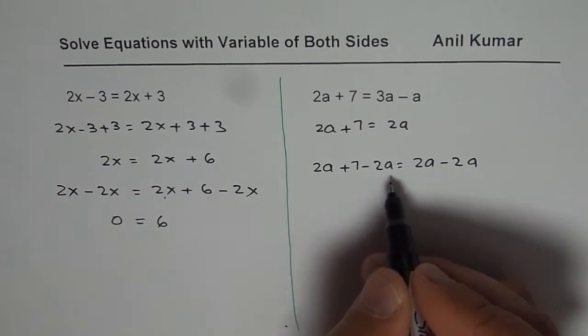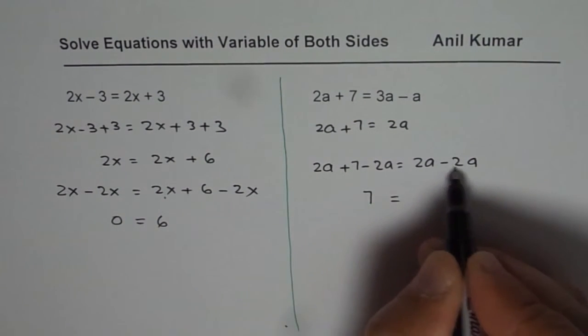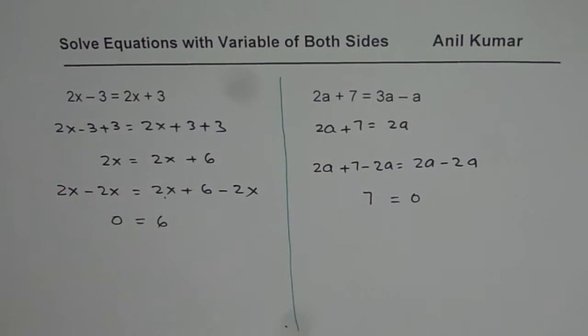Now 2a minus 2a is 0. We are left with 7 and that is 0. We get 7 equals to 0 on this side. Now what does that mean?